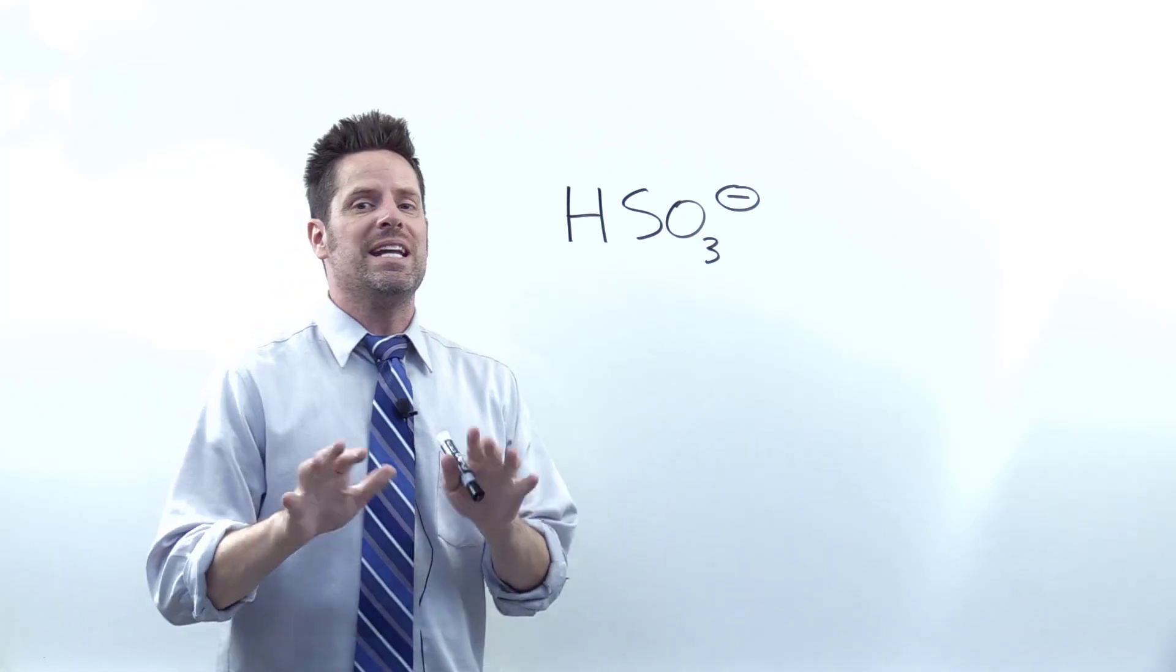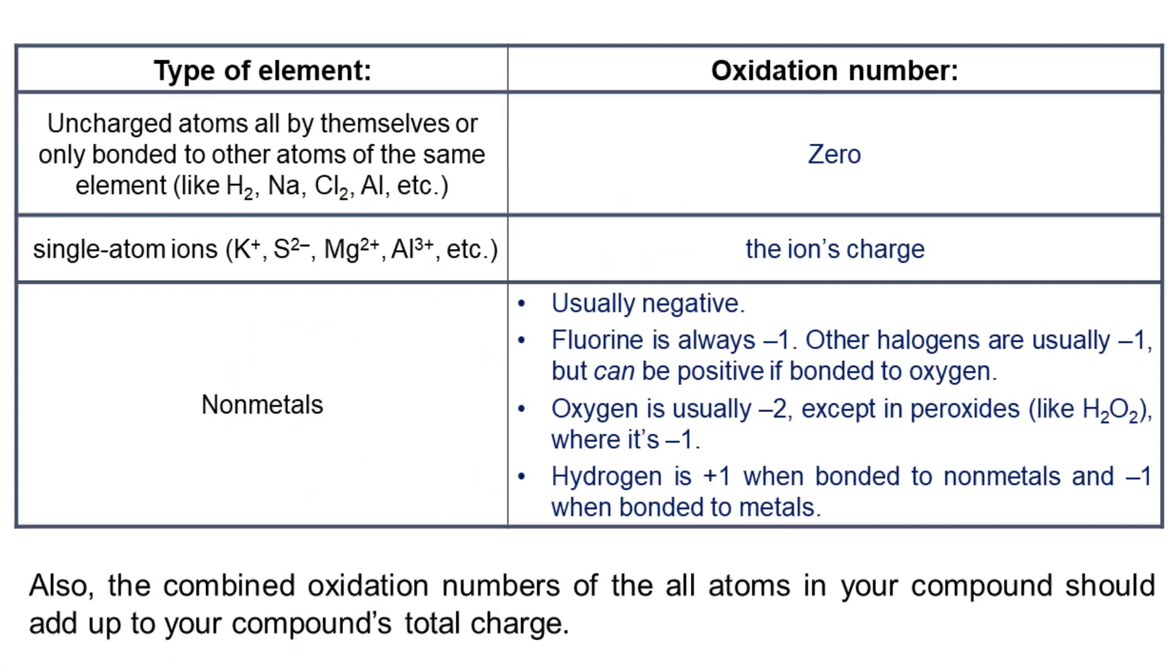Now for oxidation number problems like this one, we need to make sure that we've memorized the general oxidation number rules shown right here. Now one of the elements that has hard fast rules is oxygen. As you can see right here, if oxygen as well as any other element is all by itself with zero charge, then its oxidation number is zero. That happens if you have molecular O2.